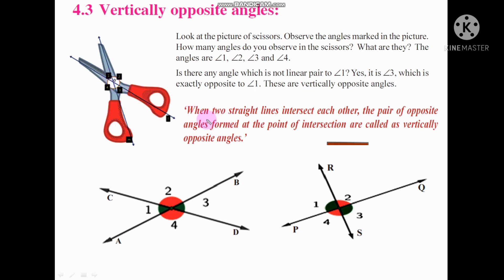We have a proper definition: when two straight lines — line L and line M — intersect each other, the pair of opposite angles formed are called vertically opposite angles. So when two lines intersect each other, the angles opposite to each other are called vertically opposite angles.